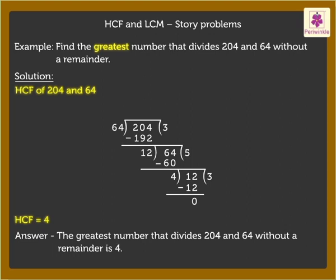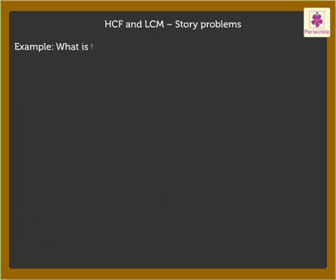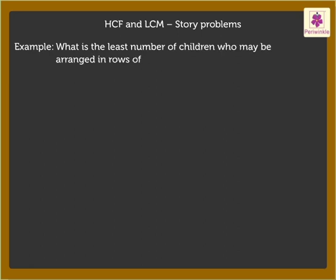Now, let us look at another example. What is the least number of children who may be arranged in rows of 12, 14 or 16 in each row? Here, we have to find the least number of children, which means we need to find the LCM of 12, 14 and 16.